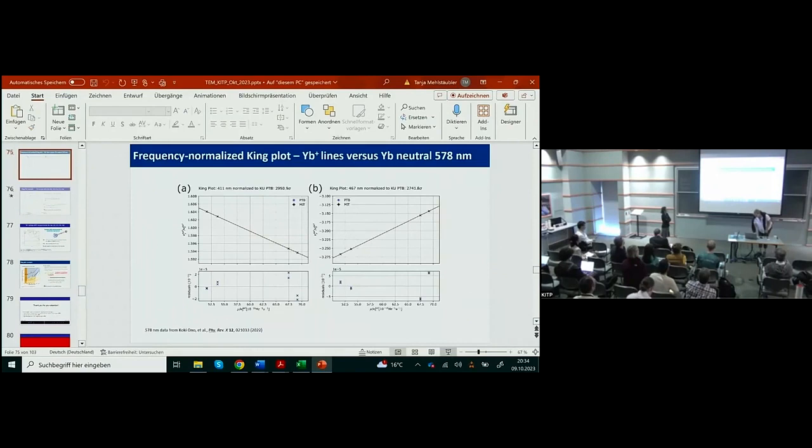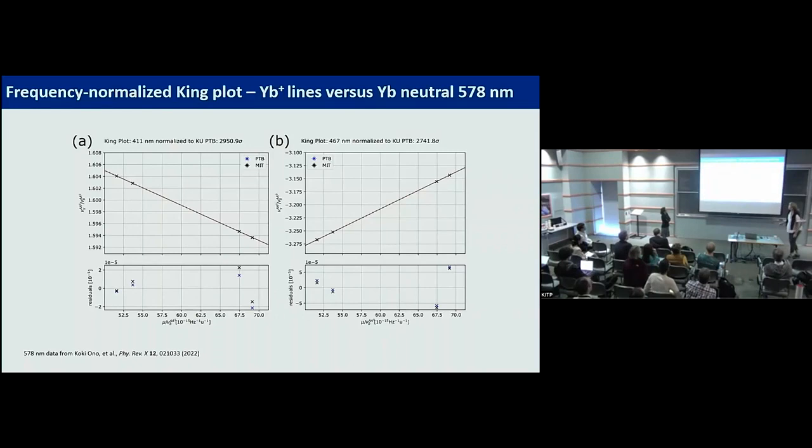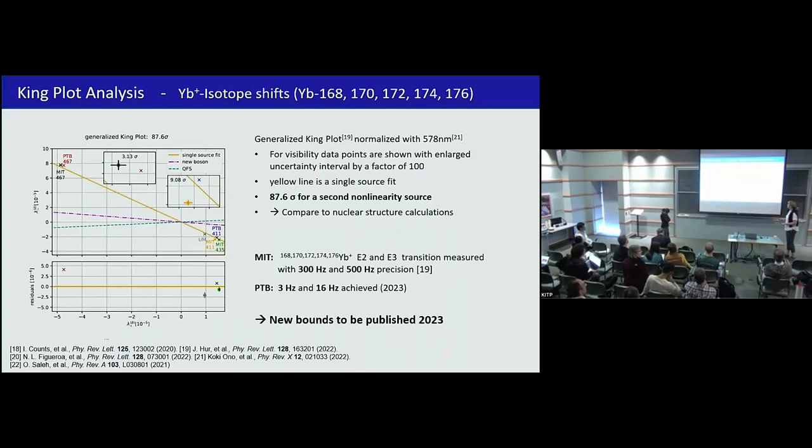This is our measurement compared to Vladan's. This is the direct linear King plot on the quadrupole transition. Here quadrupole, here octupole. On the octupole transition, we agree within the error bars pretty well with Vladan's measurements. Blue is us and black is Vladan. On the quadrupole, we had seen some deviations way outside the error bars, but we discussed it with Vladan. We had several video meetings with him and actually they fixed it.